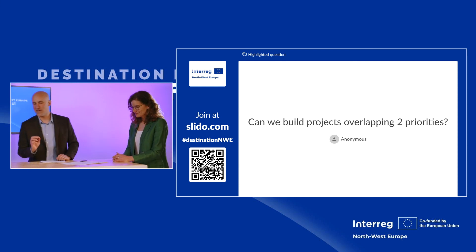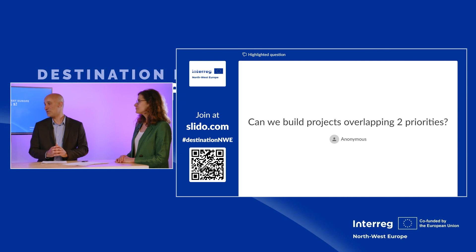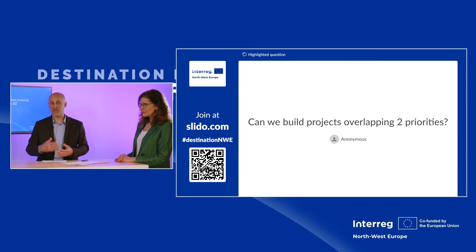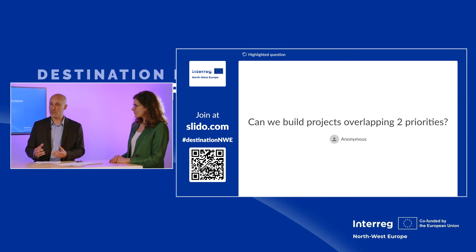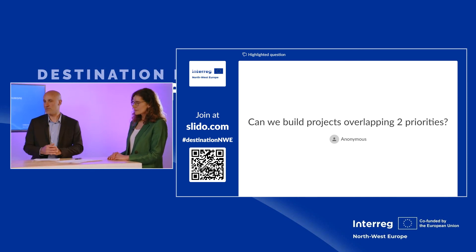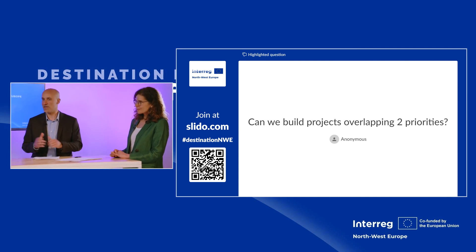If you have a hesitation between two priorities or specific objectives, contact points can help you find the right SO — as was noted, contact points have been very helpful during the development phase of projects. More information on themes and priorities is available in the Interreg Northwest Europe program document, and summary fact sheets have also been drafted to help applicants navigate this.